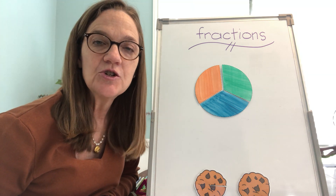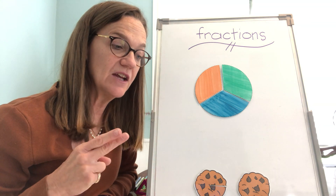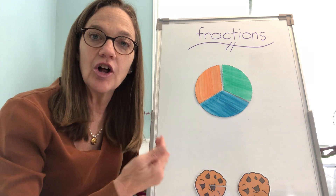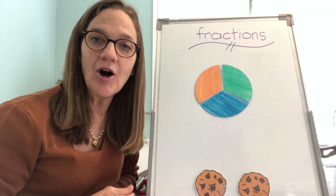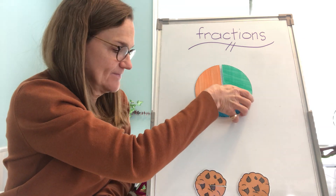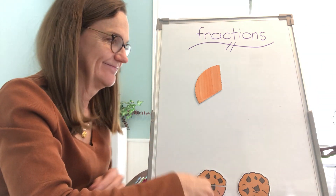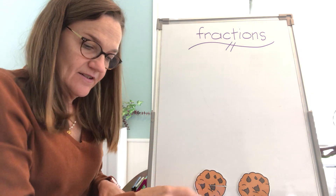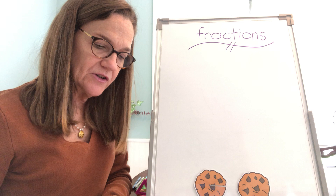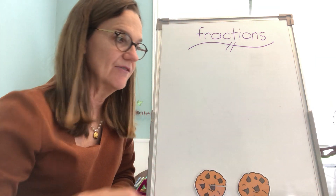Who remembers what two pieces equals? If we divide something into two pieces, what does that equal? What do we call each equal part? Halves. That's right. What do we call parts of a shape that have two equal parts? Halves. That's right.